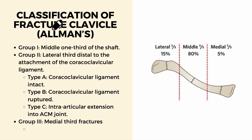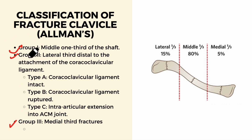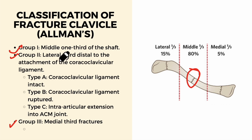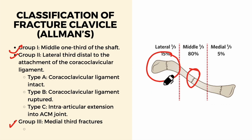Next we'll look at the classification of clavicle fracture. According to Allman's classification we have Group 1, Group 2, and Group 3. Group 1 is mainly the middle one-third of the shaft. Group 2 is the lateral third distal to the attachment of the coracoclavicular ligament. Group 3 involves medial third fractures.